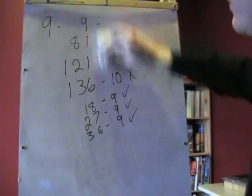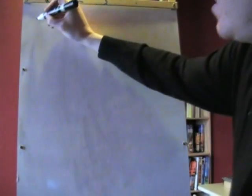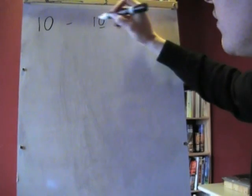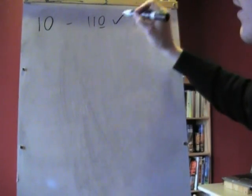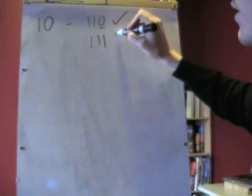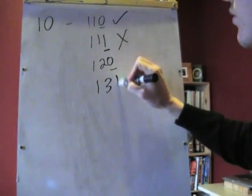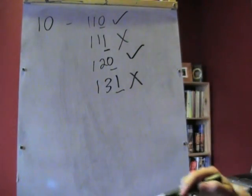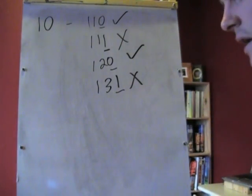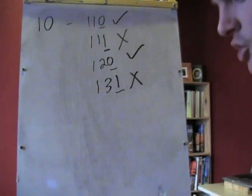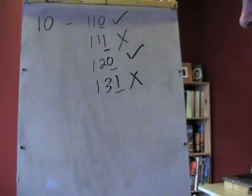The last number we're going to talk about is 10. If the number ends in 0, it's divisible by 10. So if we have the number 110, it is. If we have the number 111, it is not. You just look at this end number. And if the last number is 0, it's divisible by 10.